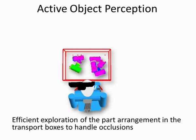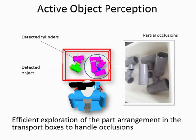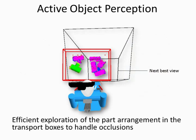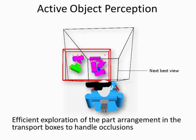Here you see a model of a transport box after the first scan. Due to partial occlusions, the robot only found one object, but also several cylinders. These cylinders make the right side of the box particularly interesting, and the robot decides to inspect this region more closely.